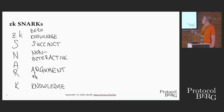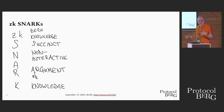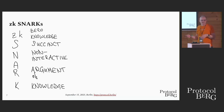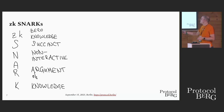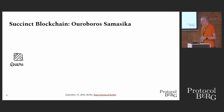Zero knowledge means that beyond convincing the verifier you know what you claim to know, you don't give away any additional information. We'll use that property later for privacy. For efficiency, we mainly use the succinctness, non-interactiveness, and the argument-of-knowledge property.